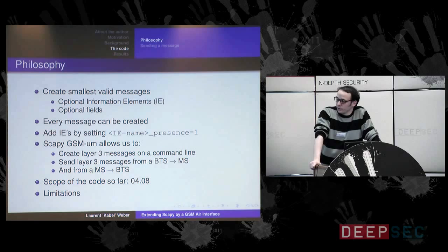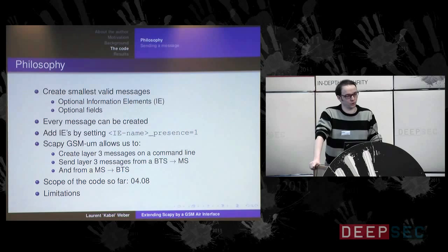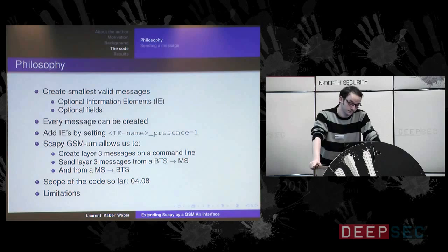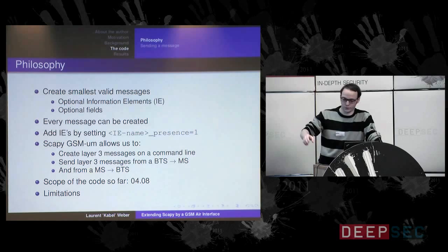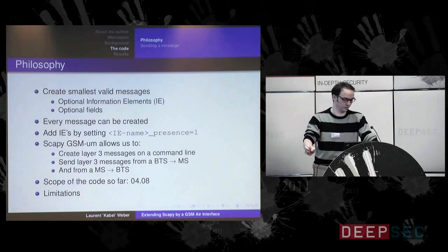Now let me explain what the tool is actually able to do. Since I implemented the whole protocol, you are able to create layer 3 messages on a command line and these messages can be sent from a base receiver station to a mobile station. This is what I will do in the demonstrations. I will only send packets from my USRP to the phones. But you could also send messages from your mobile phone to some BTS and do some fuzzing on an operator's network — but I'm not going to do this.